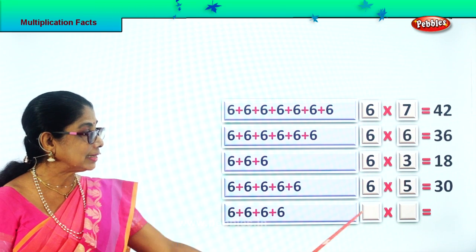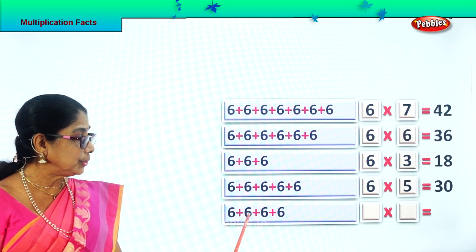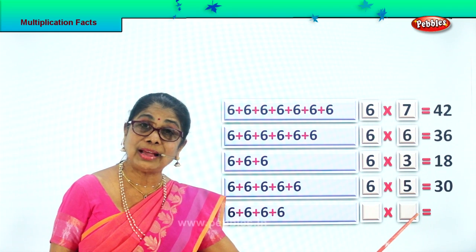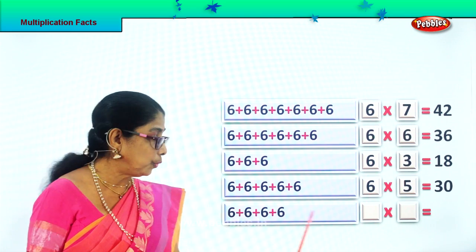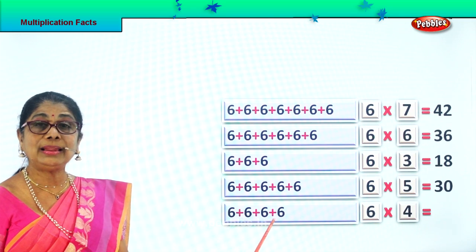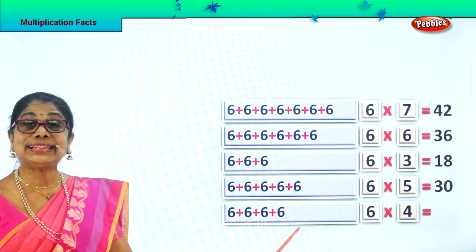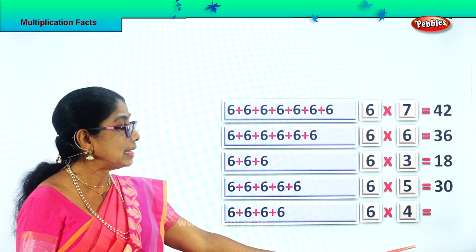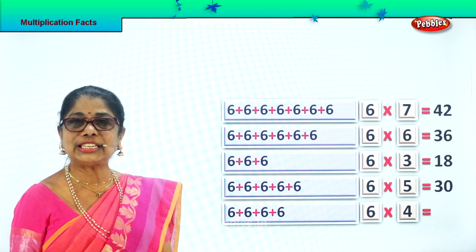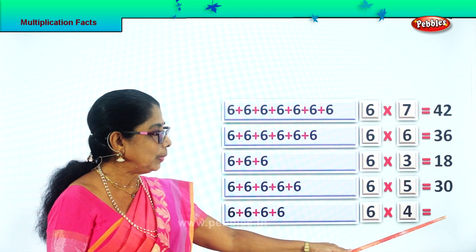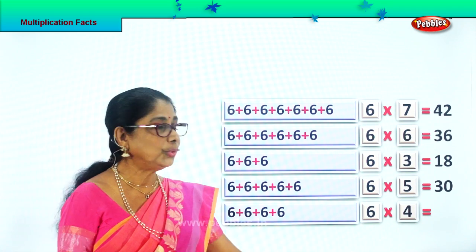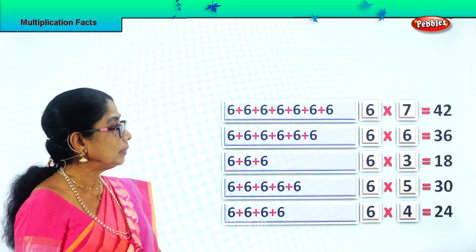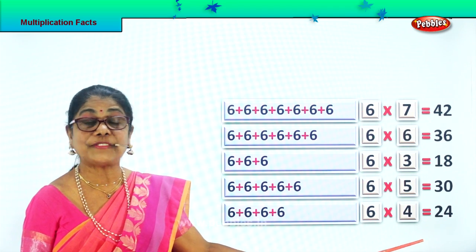The last one. 6, how many times? 1, 2, 3, 4. 6 how many times? 4 times. 6 fours are 24. 6 plus 6 is 12, plus 6 is 18, plus 6 is 24. 6 fours are 24. So this is our multiplication fact. What is 6 fours? 24. We write 24.